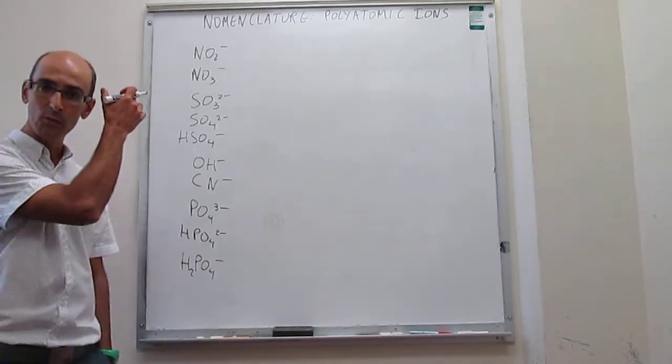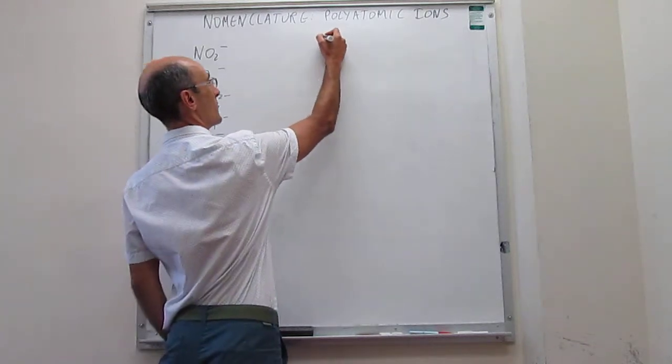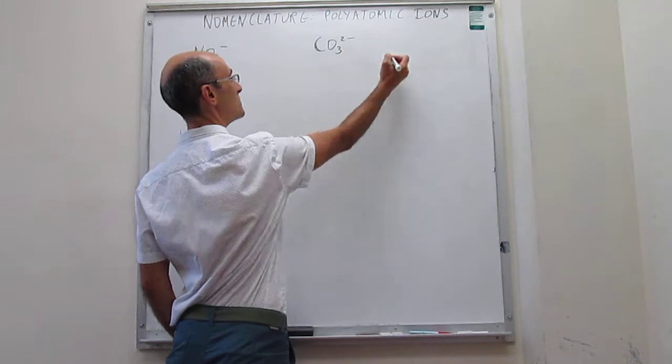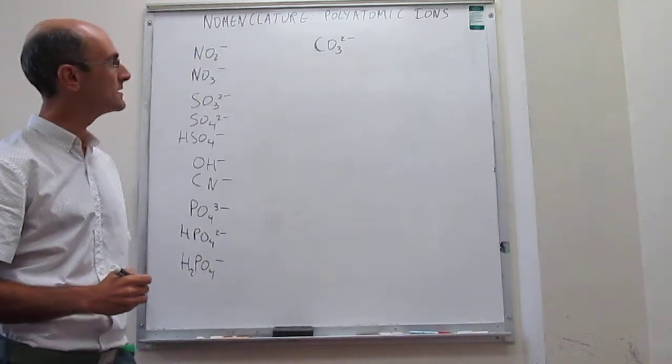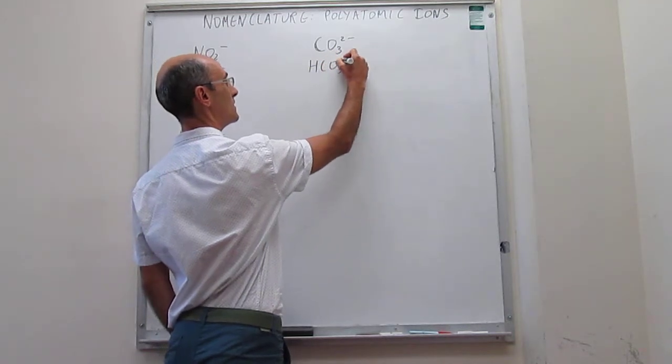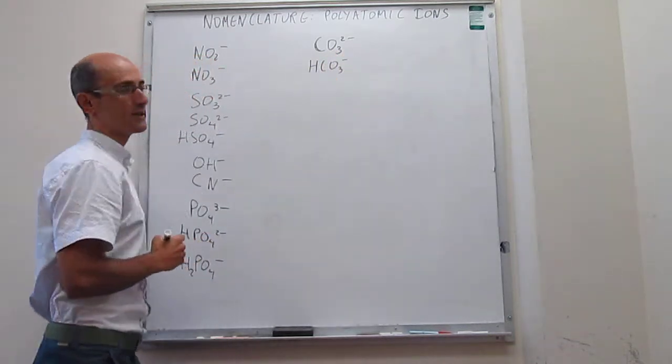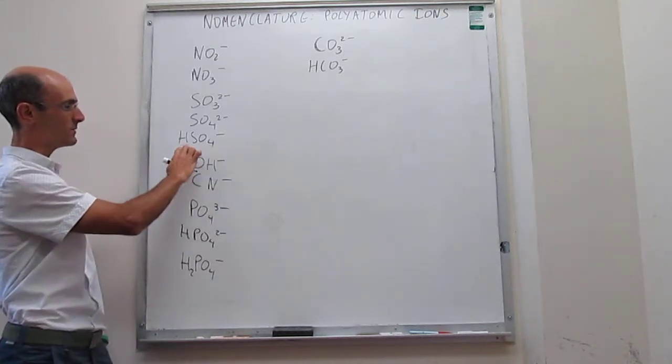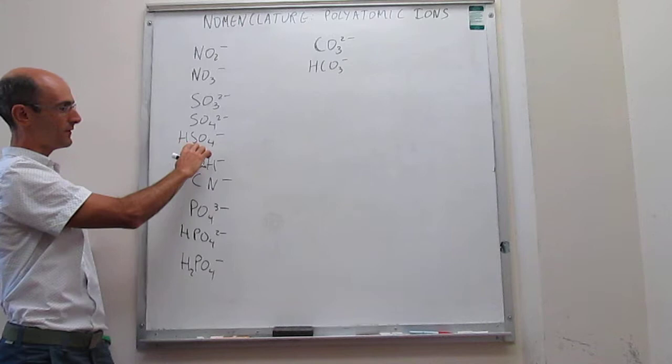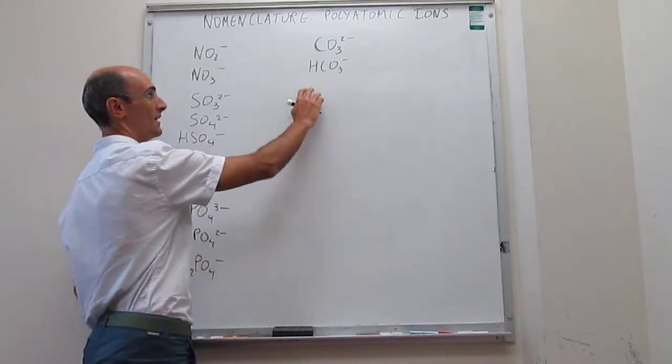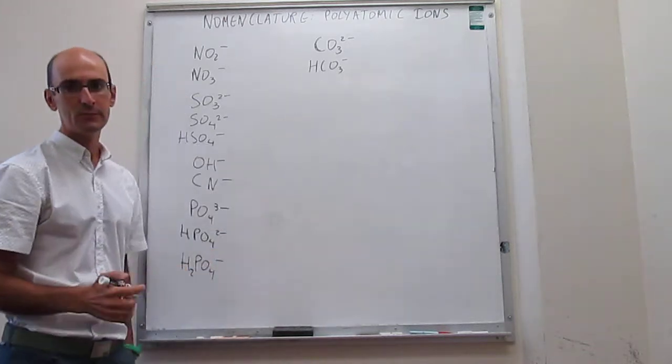Let's continue here with the list. We have CO3-2- we call that carbonate. HCO3- that is called hydrogen carbonate. So notice that there are lots of similarities between these ions that actually have here hydrogens. That is hydrogen sulfate, hydrogen phosphate, that is called hydrogen carbonate.